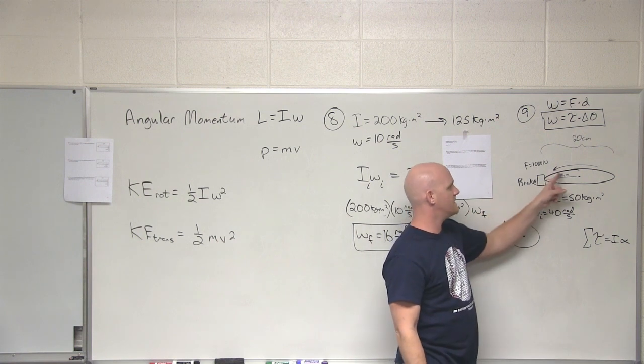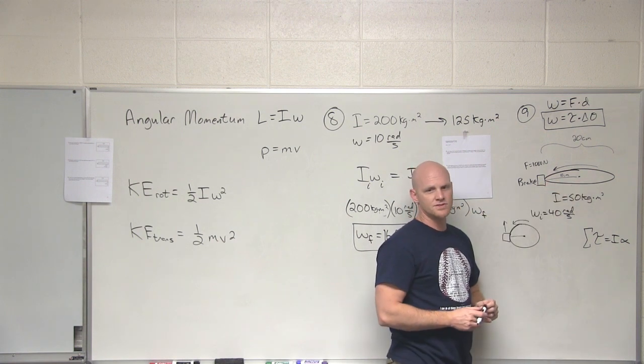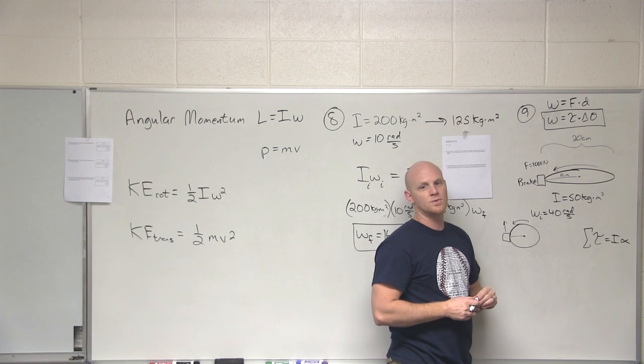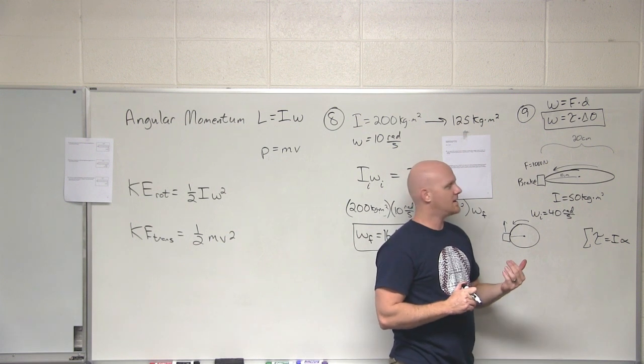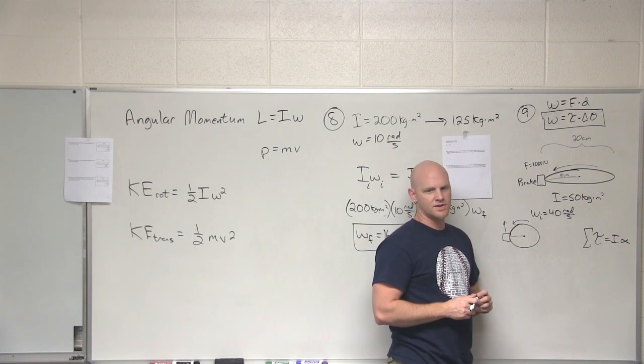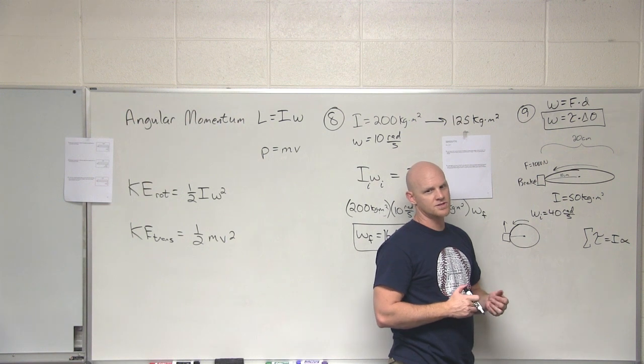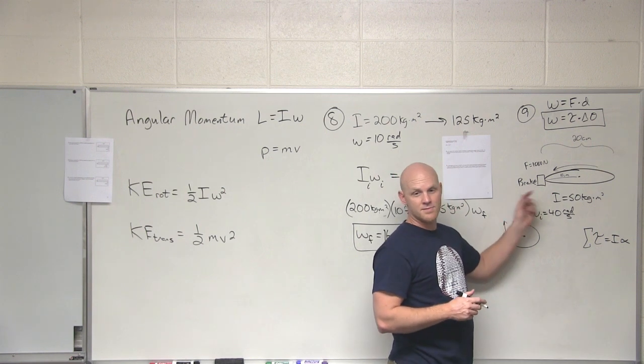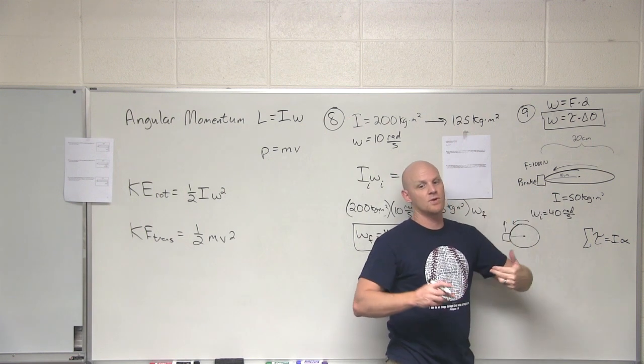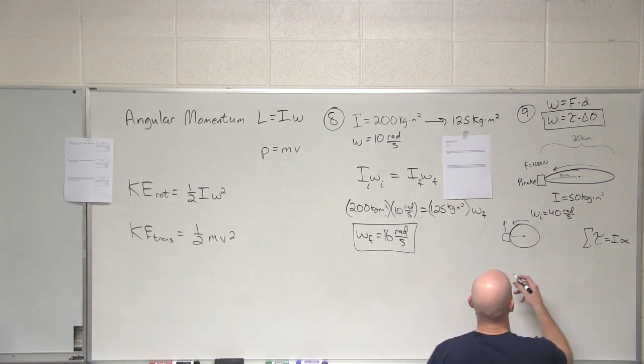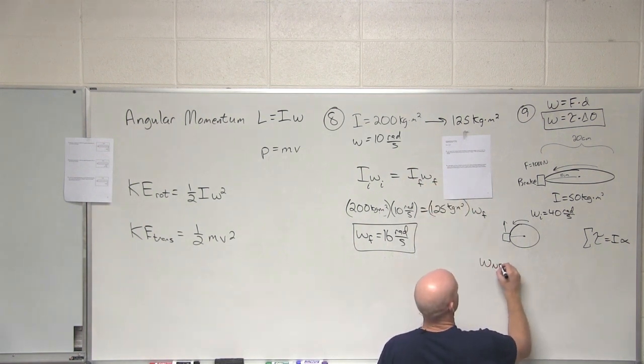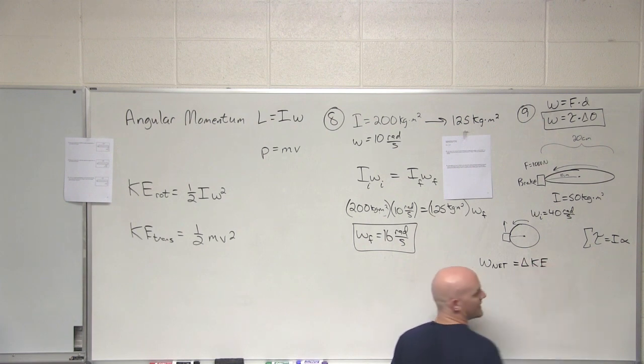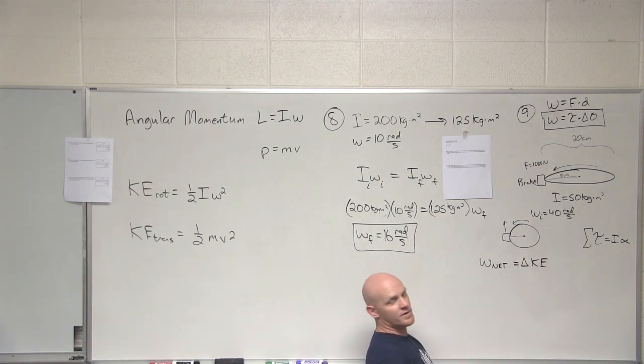So in this case, what kind of energy does this wheel have initially? Rotational kinetic energy. Once it stops, does it still have rotational kinetic energy? No. Where did that energy go? It was work performed by the brake to stop it. And so if you recall this lovely equation, your net work on an object is equal to the change in its kinetic energy. And that's what we're going to use here. The work net is the work of the brake. And this is a much easier calculation.